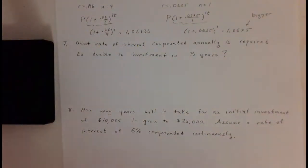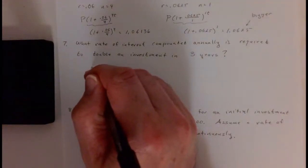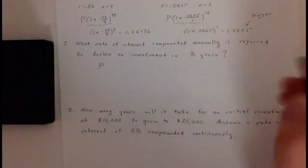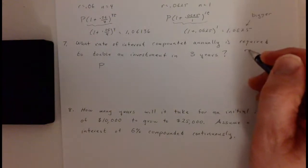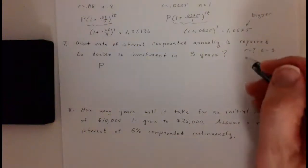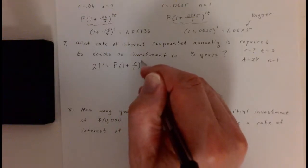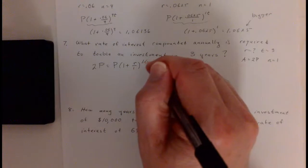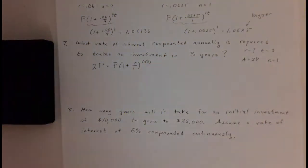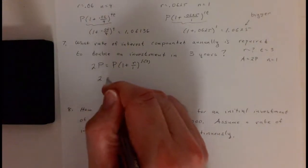For number seven: what rate of interest compounded annually is required to double an investment in three years? Again, we're not given the initial amount because it won't matter. R is what we're looking for, T is three, and we want A to equal two times P. With N equal to one, we set up: two P equals P times one plus R over one raised to the one times three.